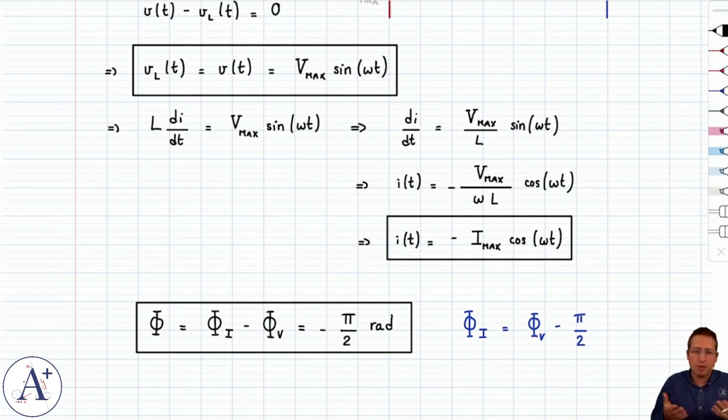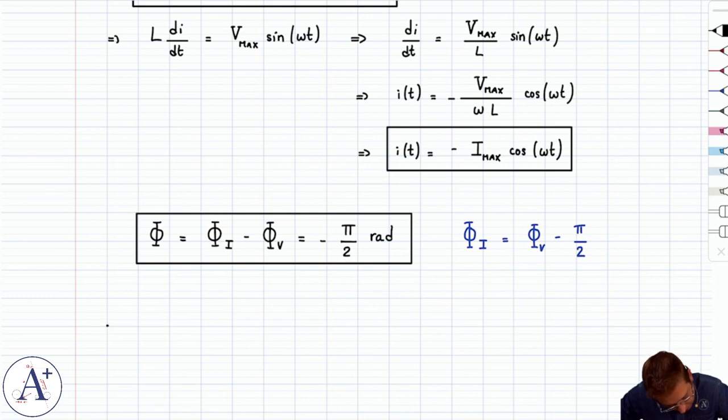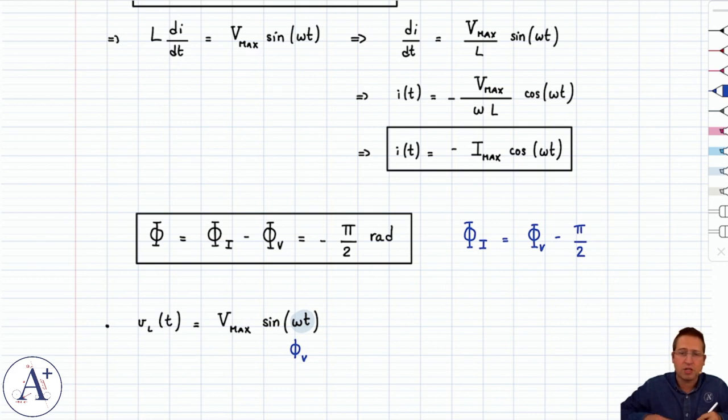And we're going to do the same thing that we did with the capacitor. In other words, we're going to write everything in terms of sin(ωt). So VL(t) is Vmax sin(ωt). That tells us that φ_v is ωt, because remember that whatever is in the sine or the cosine is called the phase. So the phase associated with the voltage is ωt.